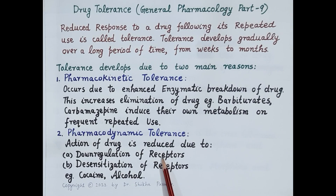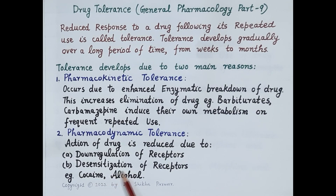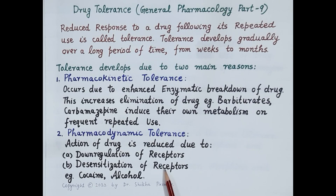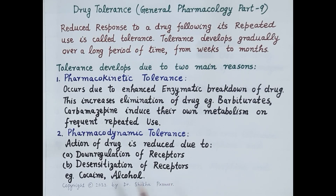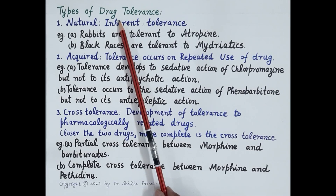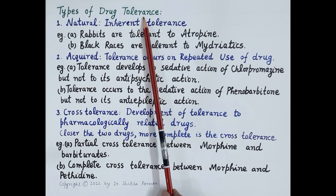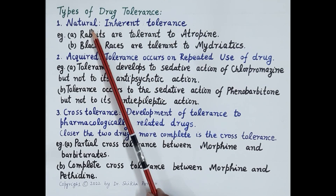In pharmacodynamic tolerance, the action of the drug is reduced due to down-regulation of receptors — that is, receptors are inactivated, degraded, or broken down due to constant stimulation. A second important cause is desensitization of receptors, where the sensitivity of receptors reduces and a higher dose of drug is required to produce the same earlier response. Drugs like cocaine and alcohol rapidly develop pharmacodynamic tolerance.